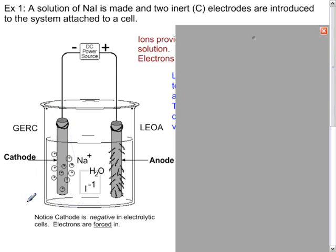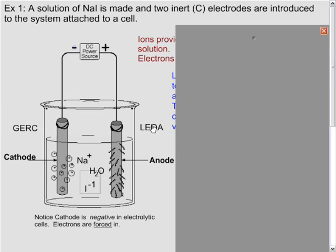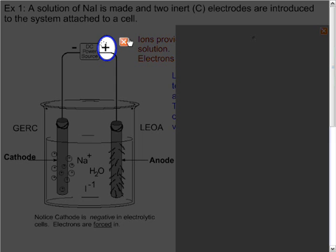Now a few differences. The cathode is negative in electrolytic cells. The cathode is positive technically in electrochemical cells. It is negative in electrolytic as electrons are forced into the cell to force the reduction to occur. So the cathode is the negative side and the anode is the positive side.